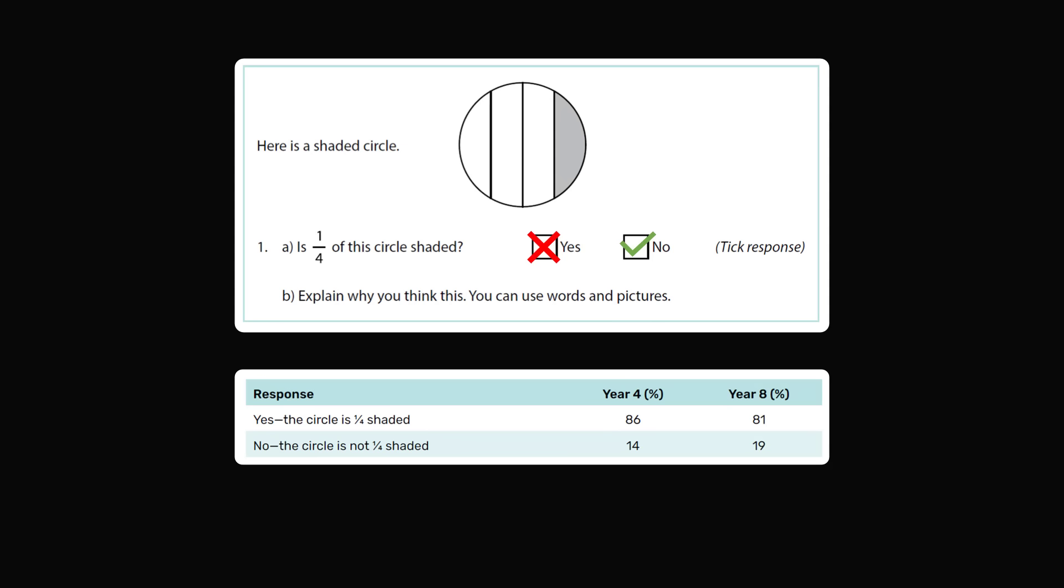But unfortunately, by year 8, 81% of students are still picking the wrong answer. Only 19% of students would get this question right. So what's going on?